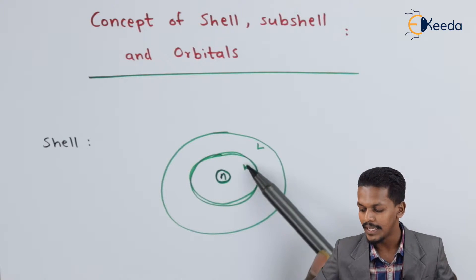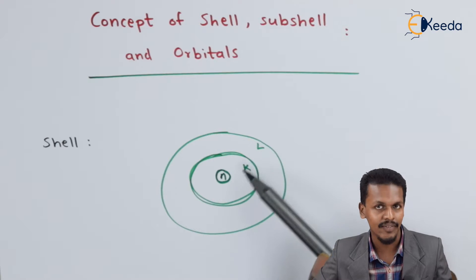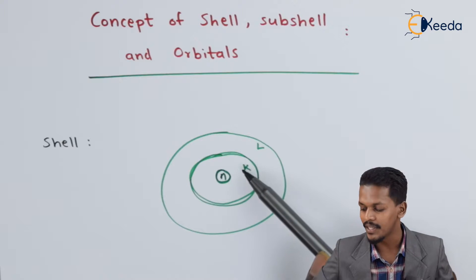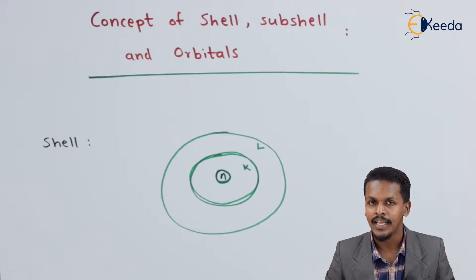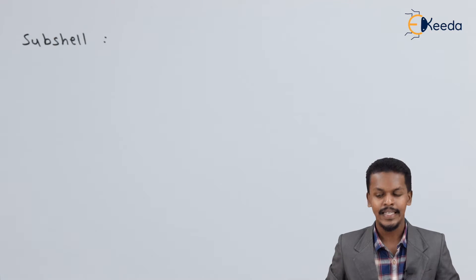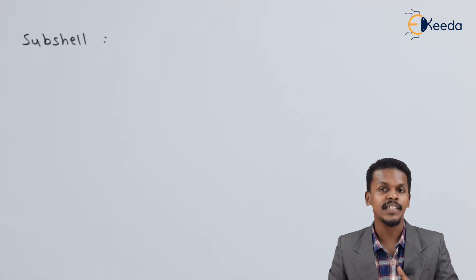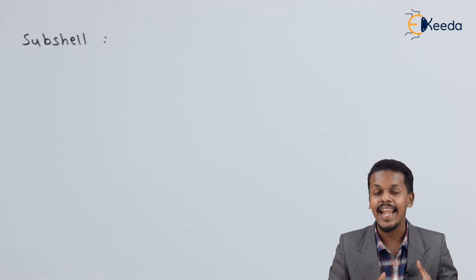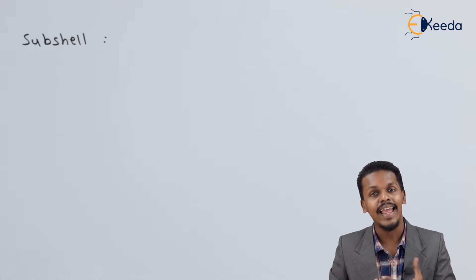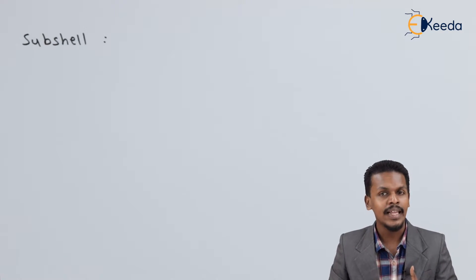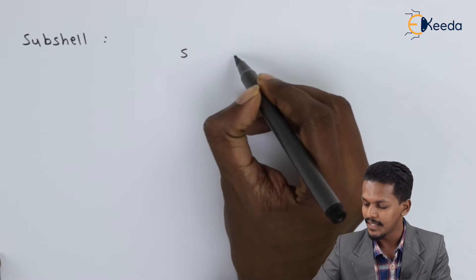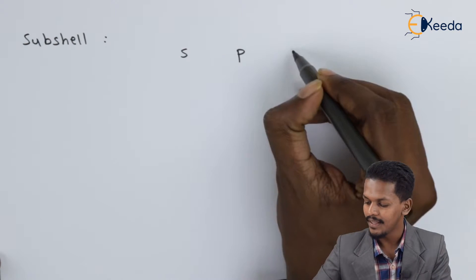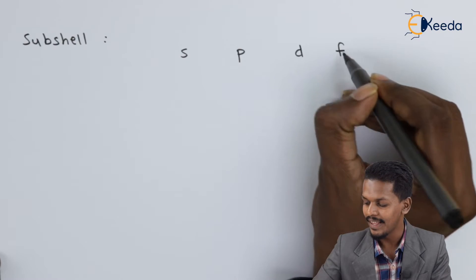There are many shells as well as sub-shells. What is a sub-shell? A sub-shell is nothing but a part of a shell, and every shell has sub-shells. For example, there are 4 types of sub-shells: sub-shell S, P, D, and F.